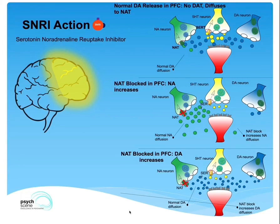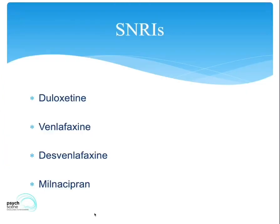Now let's look at the different kinds of SNRIs. We have duloxetine. Duloxetine is used in pain specifically, such as chronic musculoskeletal conditions, neuropathic pain, and fibromyalgia. Of course, there is also evidence-based use in anxiety disorders.